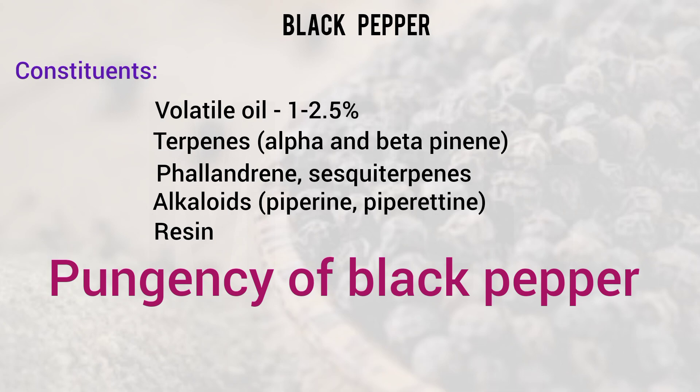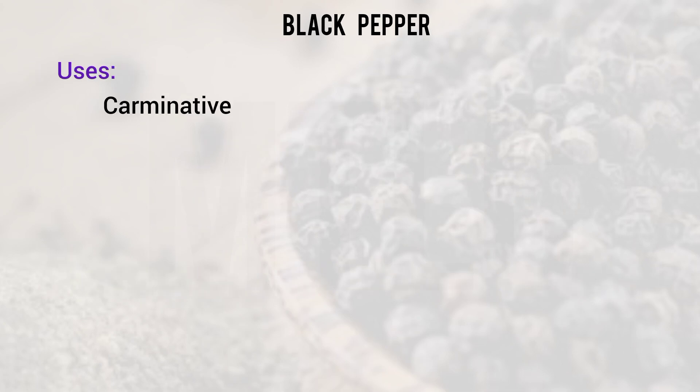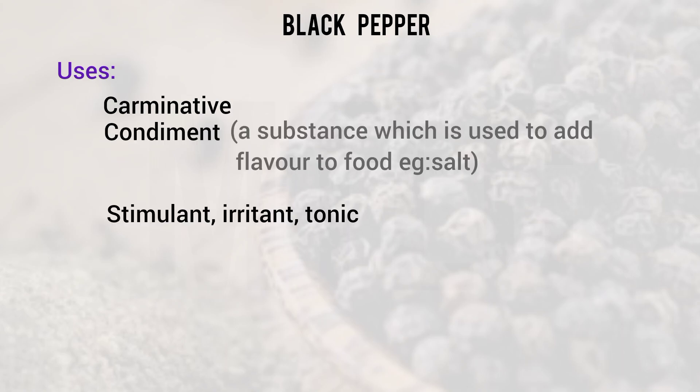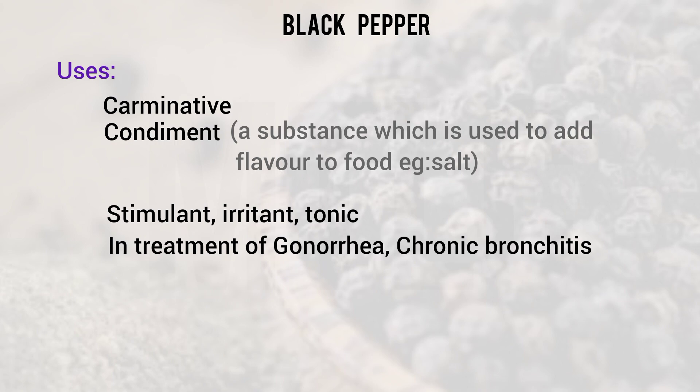The pungency is due to piperine and resin. The uses of black pepper are as a carminative, condiment, stimulant, irritant, and tonic. It is also used in cases of gonorrhea and chronic bronchitis.